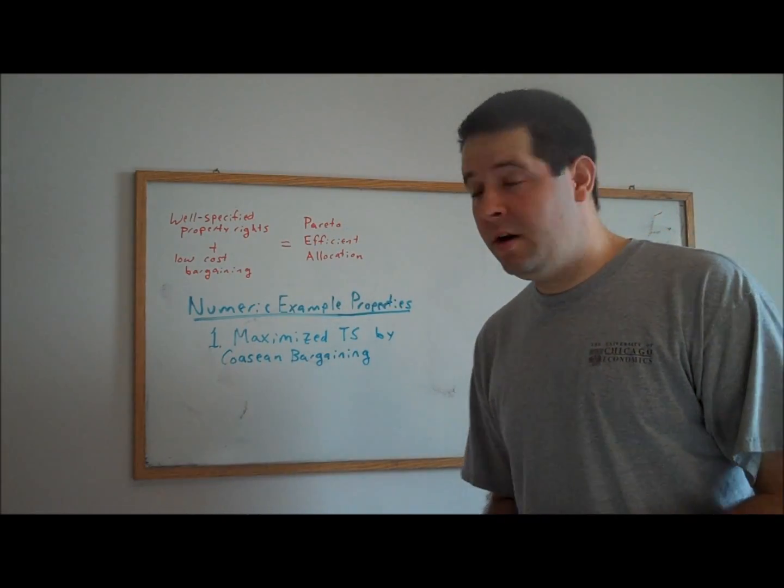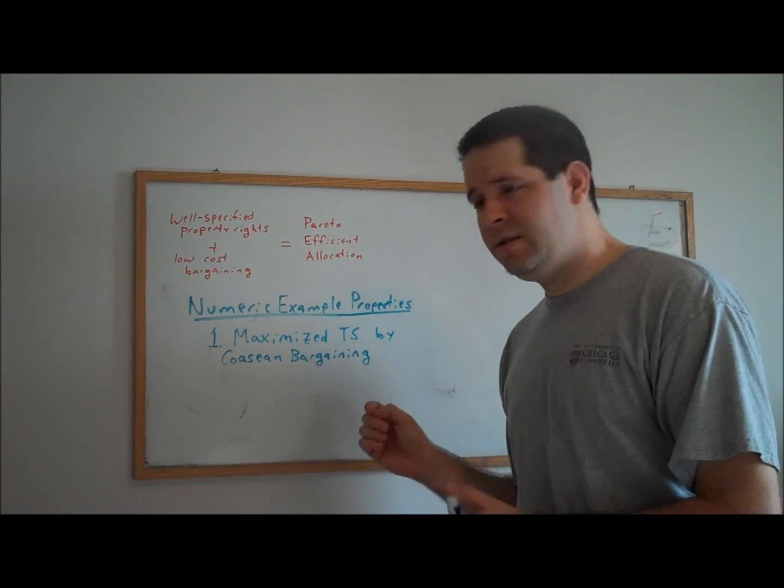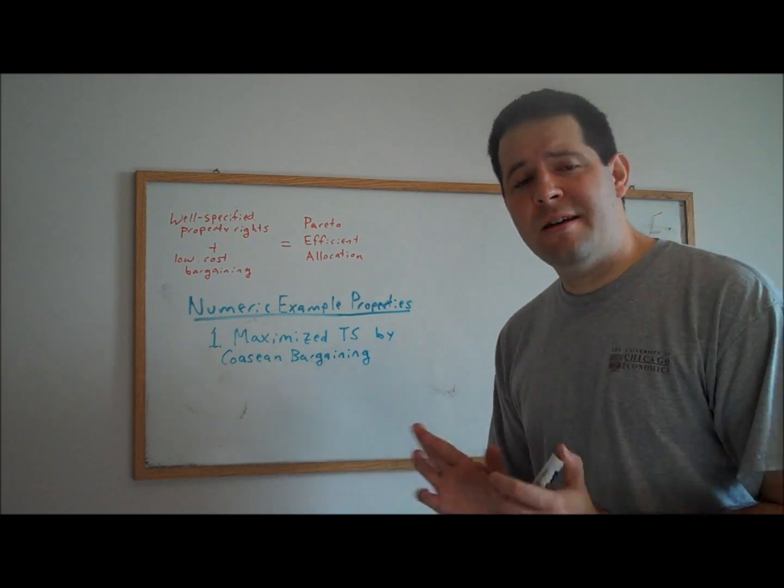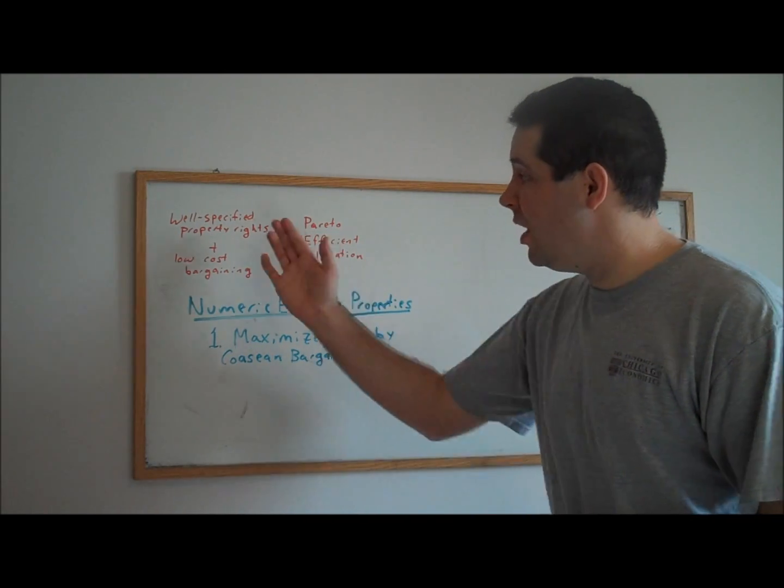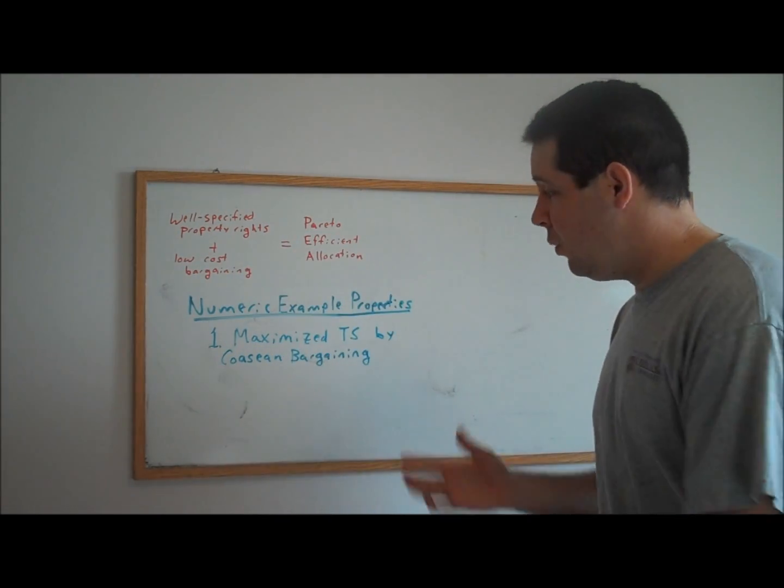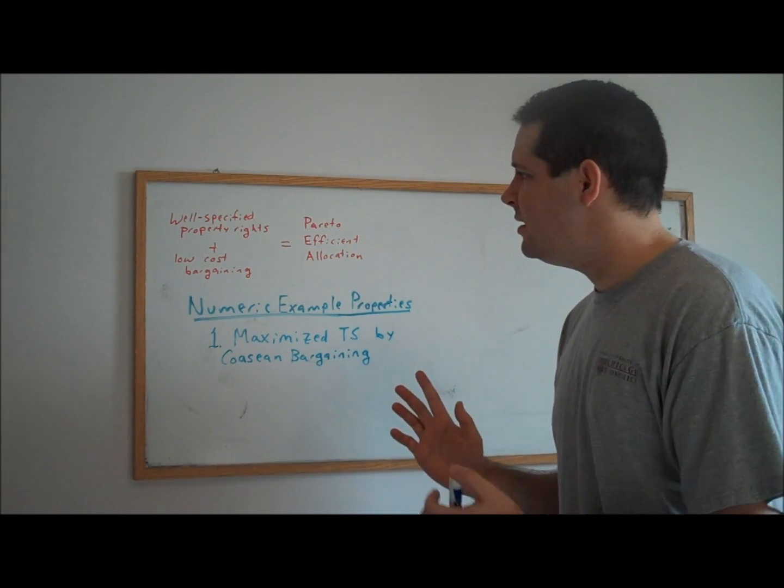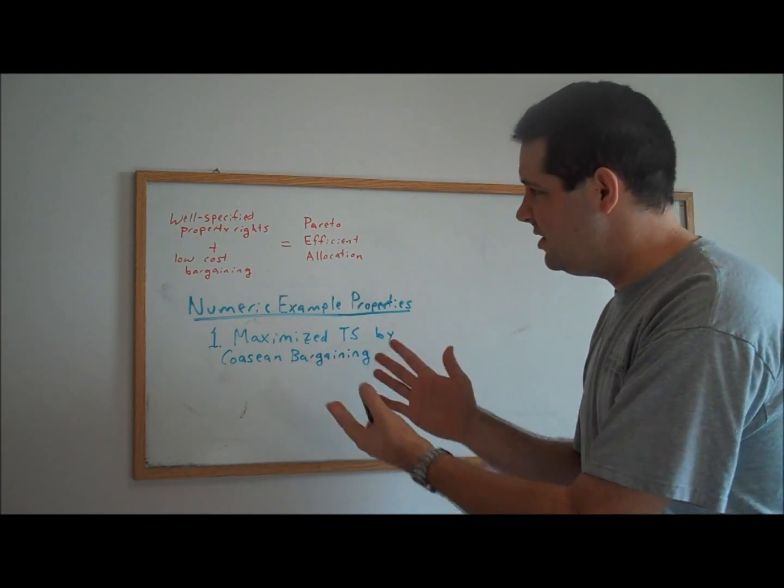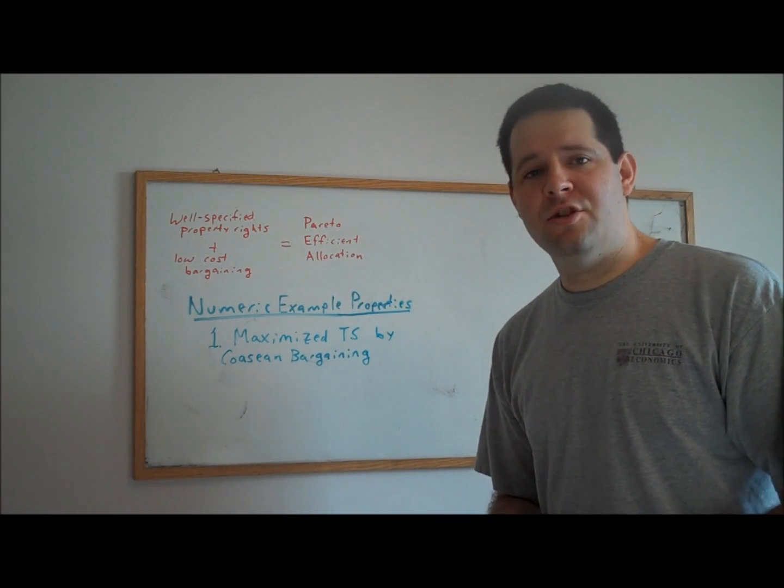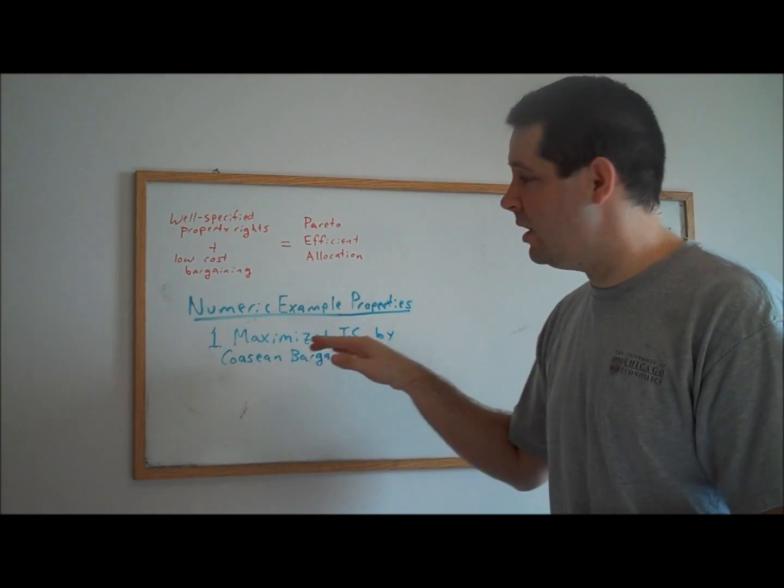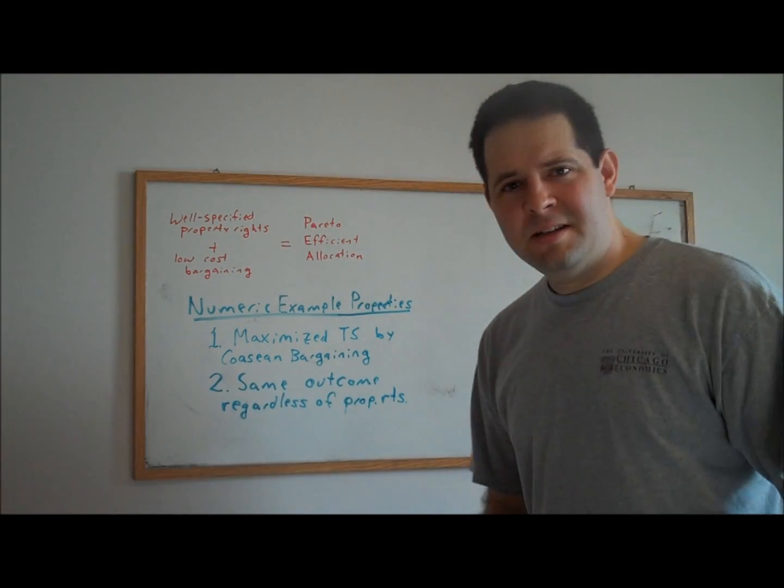In particular, the first property that we saw in that numeric example was that we maximized total surplus by Coasean bargaining. That would lead you to believe that another way to state this Coase Theorem is to say that if we have well-specified property rights and low-cost bargaining, we will maximize total surplus. That's not quite what the Coase Theorem says, and it says something a little bit simpler and a little bit easier to verify, which is that we get to a Pareto-efficient allocation. Wherever we end up after this Coasean bargaining, we can't make anyone better off without making anyone else worse off.